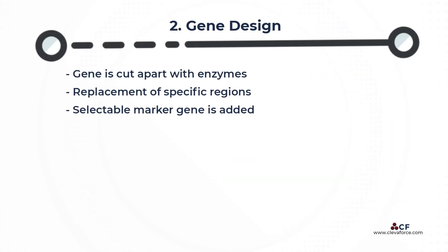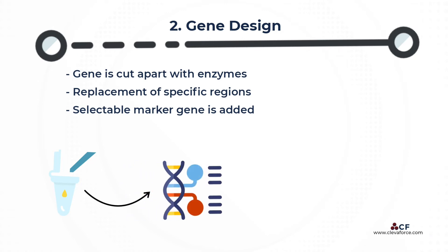Gene design. After cloning a gene, genetic engineers proceed to the next step, which involves designing the gene to function once inside a different organism. In a test tube, this is accomplished by cutting the gene apart with enzymes and replacing specific regions that initiate and terminate transcription, such as the promoter and terminator regions.